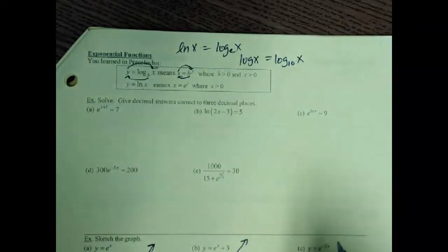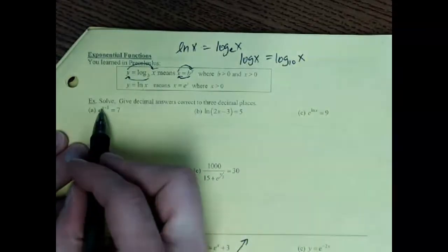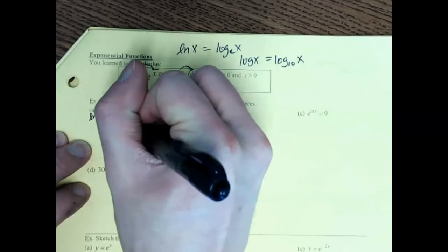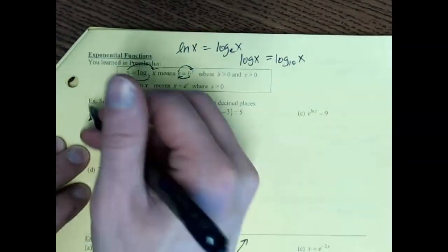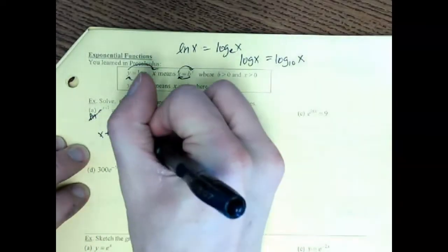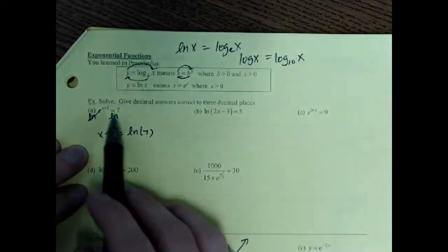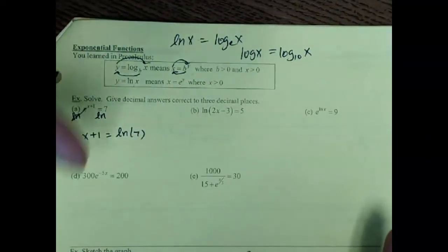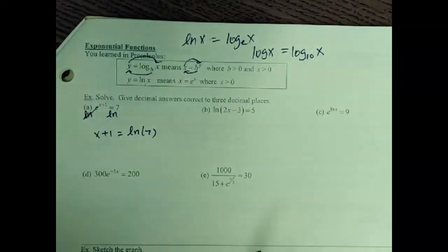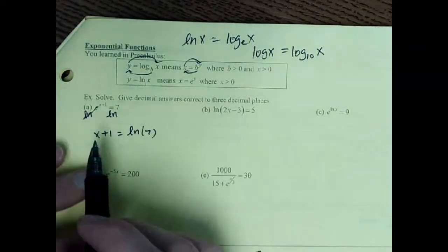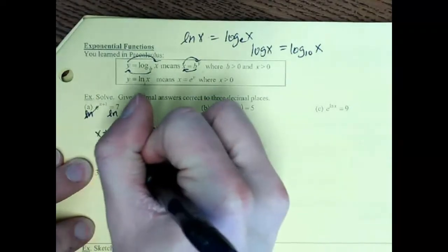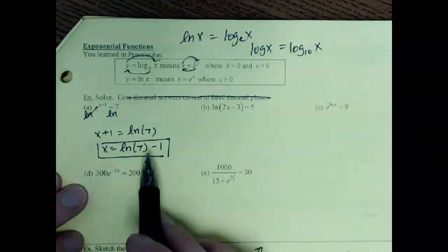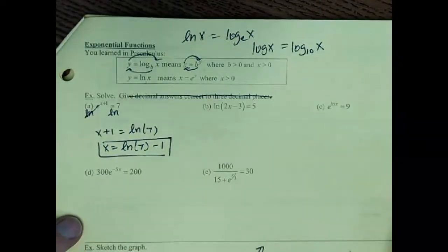Let's do these five, then look at the graphs, then get into the calculus. Here I've got e to some stuff equals 7. I need to get rid of the e, so I take a natural log on both sides — the ln and the e cancel, leaving x plus 1 equals ln of 7. Then subtract 1. Be careful: it's not ln of 6. It's just ln of 7 minus 1. The 1 does not go inside the natural log — don't make that mistake.